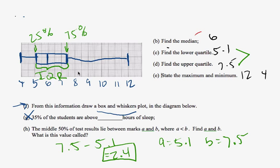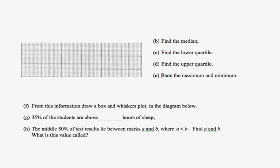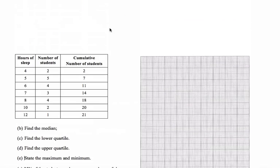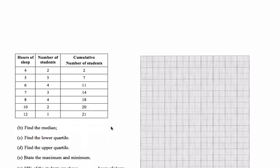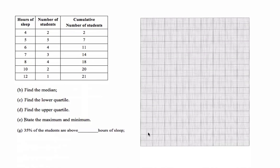So, to summarize, we took our data, and we were able from our data to make a cumulative frequency. From the cumulative frequency, we were able then to plot these points on a graph, get various values, and make a box and whisker plot.